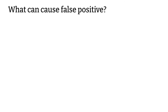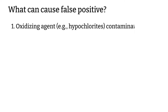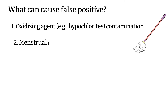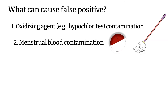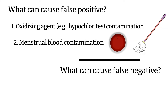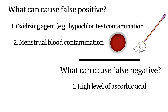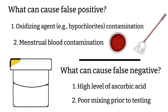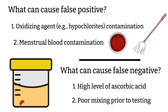Now let's talk about false positive and false negative results. For false positive, contamination with oxidizing reagents like hypochlorite and menstrual blood can cause false positive test results. As for the false negative test results, a high level of ascorbic acid can give a false negative result, as well as not mixing the sample thoroughly before the test — this can also give a false negative because RBCs are heavy and could settle to the bottom of the specimen cup.